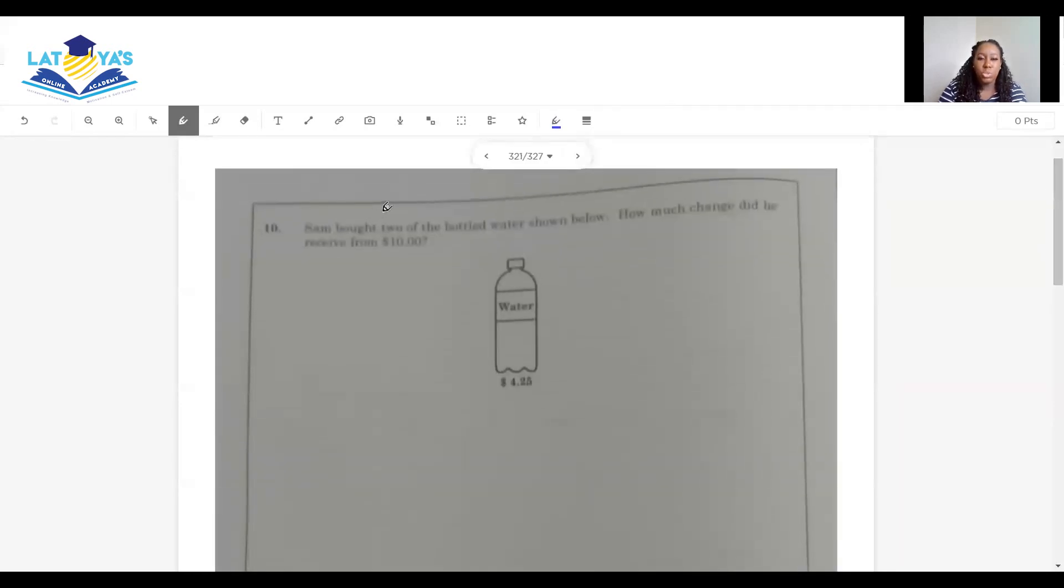Question 10. Sam bought two of the bottled waters shown below. How much change did he receive from $10? So the cost of one bottled water is $4.25. So therefore, the cost of two bottled waters would be $8.50. How do I know that? $4.25 by 2, two fives are 10. Two twos are 4 and one is 5. Two fours are 8. So the cost of two bottled waters is $8.50.